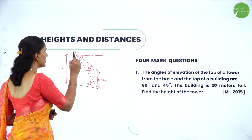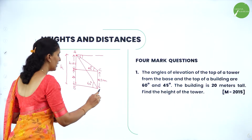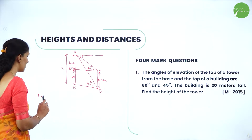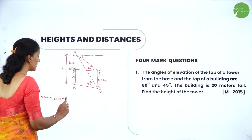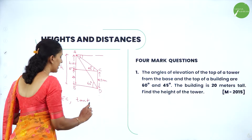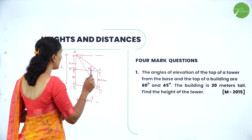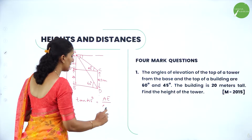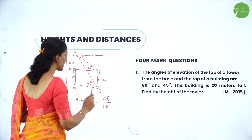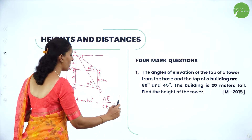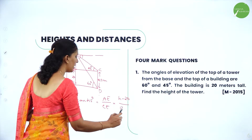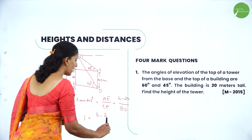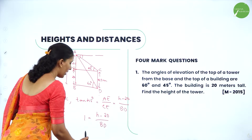From the diagram, let me consider the points as A, B, C, D, and E. From triangle AEC, I can write tan 45° = CE by AE, which is the opposite side by adjacent side, that is AE by CE. CE can also be written as BD. AE is H minus 20, divided by BD. So tan 45° is 1, therefore 1 = (H − 20) / BD, or BD = H − 20.